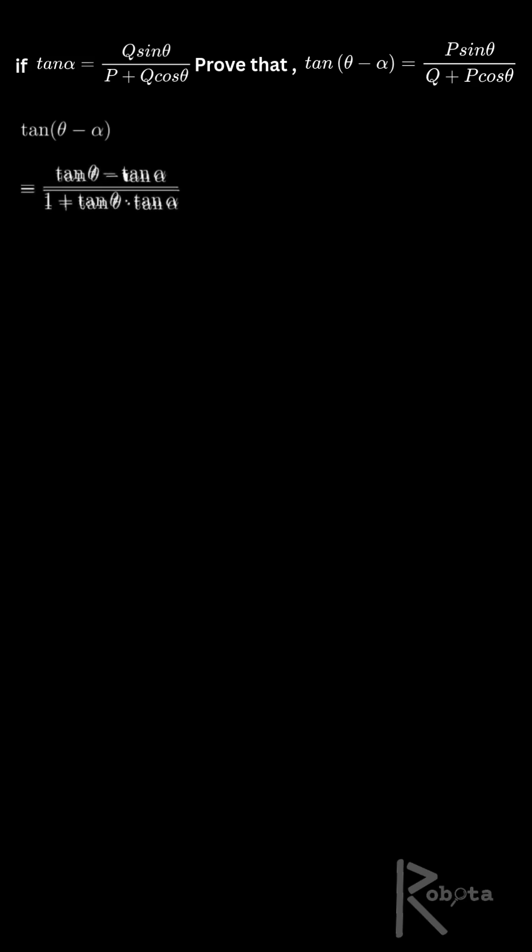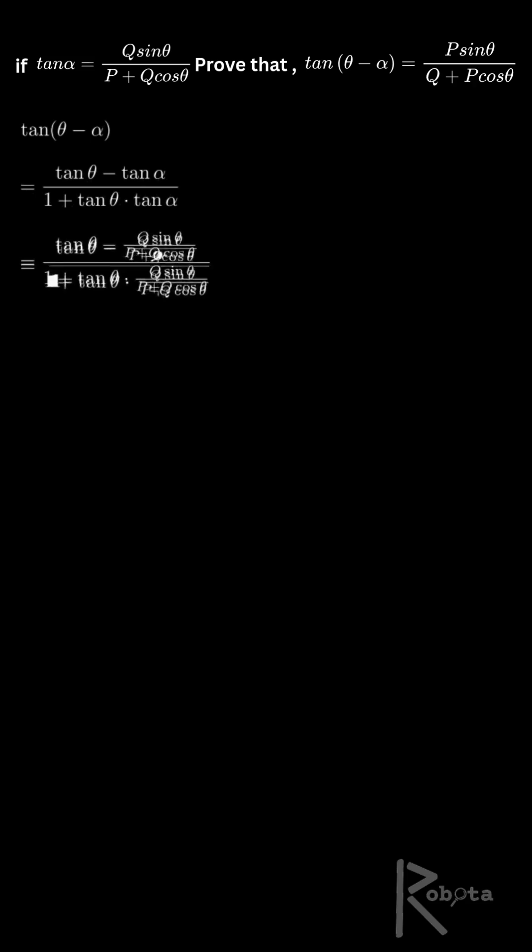Substitute the given tan alpha. In the numerator, we get tan theta minus q sine theta over p plus q cos theta. In the denominator, we get 1 plus tan theta times q sine theta over p plus q cos theta.